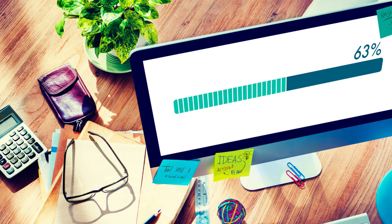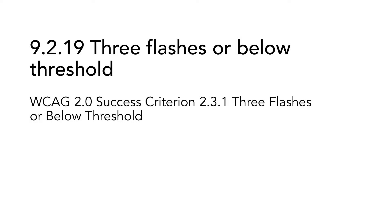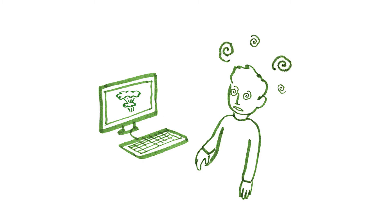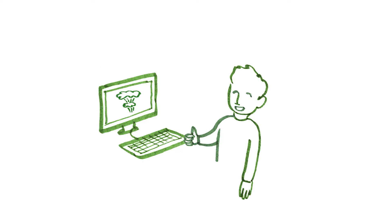9.2.19 Three flashes or below threshold is based on WCAG 2.0 Success Criterion 2.3.1 Three flashes or below threshold. It is important that the content does not risk causing seizures. Therefore, web pages should not contain anything that flashes more than three times in a one-second time period. This might not be very common on web pages, but it can occur in videos. So please ensure that both the website itself and the videos that you show on the website meet this requirement. The success criterion is also passed if the flashing does not contain more than three red flashes in any time period of one second, or if the area that flashes is very small. There are detailed measurements in the standard.